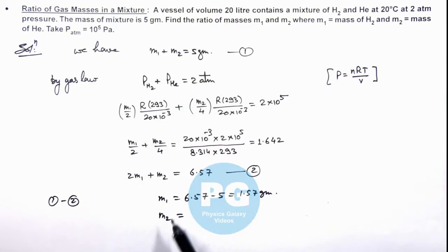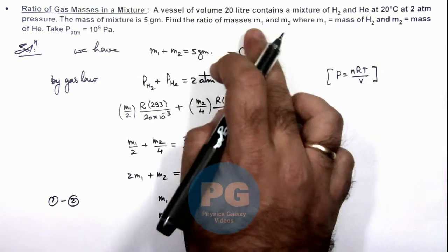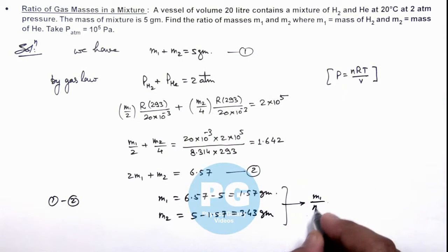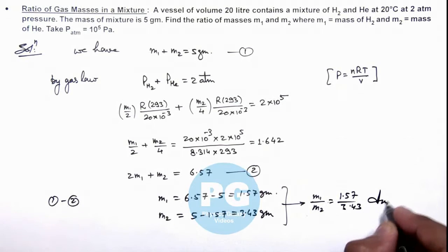So this is 5 minus 1.57, this is 3.43 gram. So as we have got the value of m1 and m2 we can find out the ratio of masses, this is m1 and m2. So m1 by m2 is equal to 1.57 by 3.43. That will be the result of this problem.